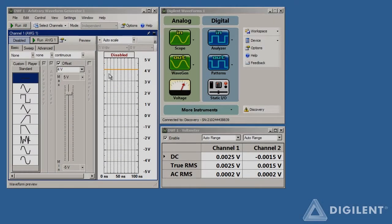I've already got the waveform generator and the voltmeter instruments opened and set up. In the waveform generator, I've set the voltage to be a constant value of 4 volts. To apply voltage, click on Run AWG1.